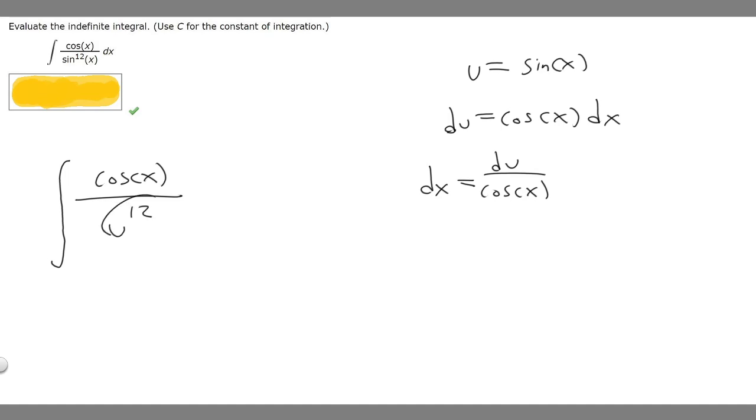What you can notice here is that this thing right here, we can write as just cosine of x times 1 over u to the 12th. And 1 over u to the 12th is the same thing as u to the minus 12th. So what I'm going to do is just move it out front. So we're going to have u to the minus 12 times the cosine of x.